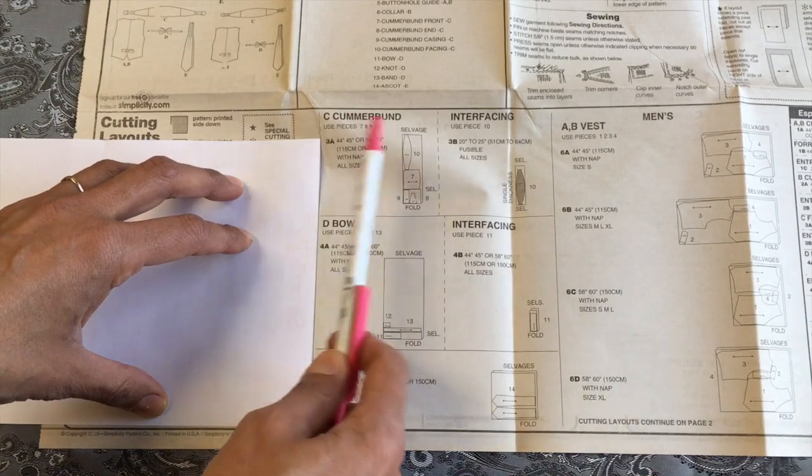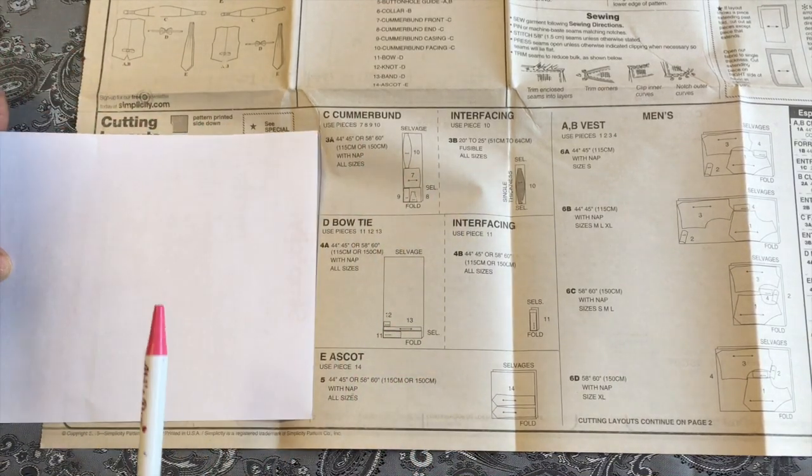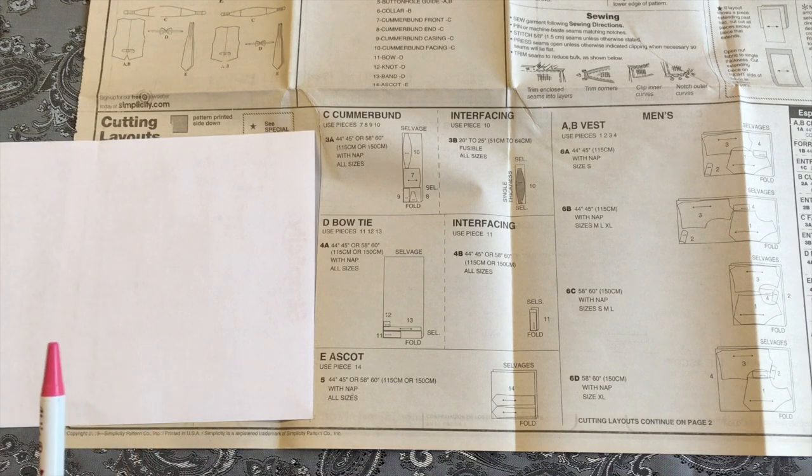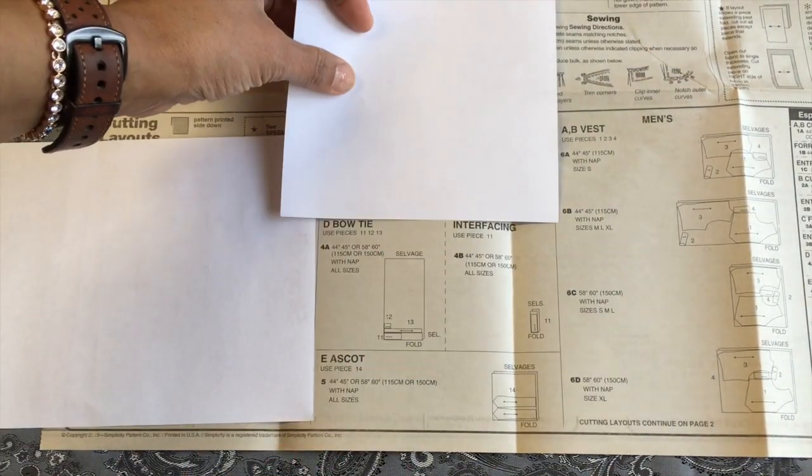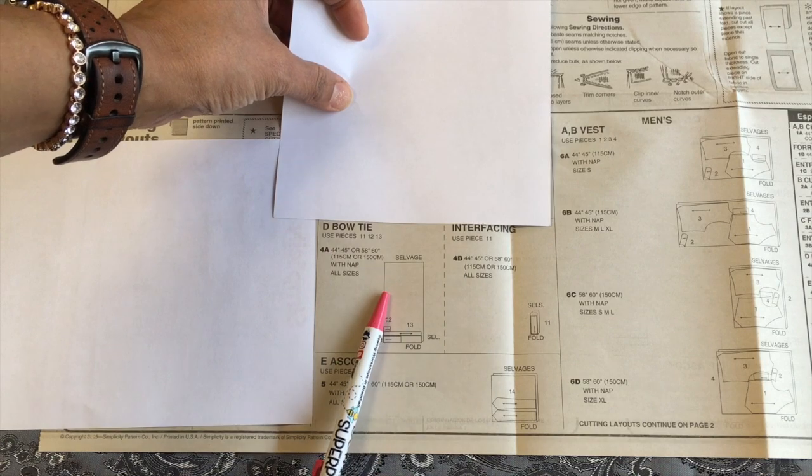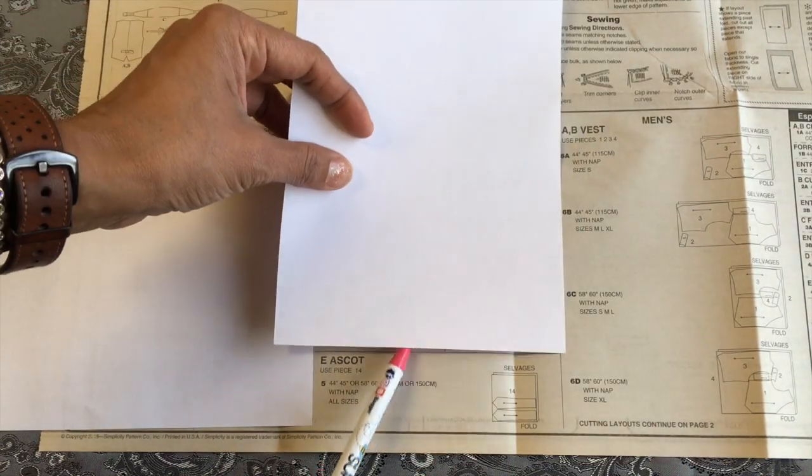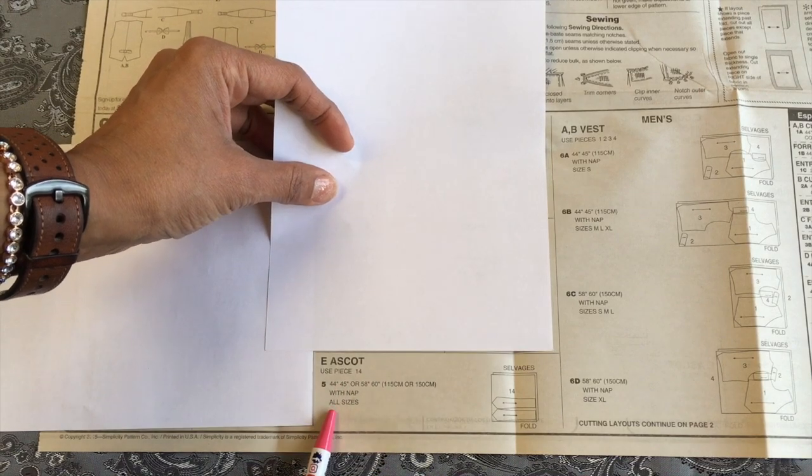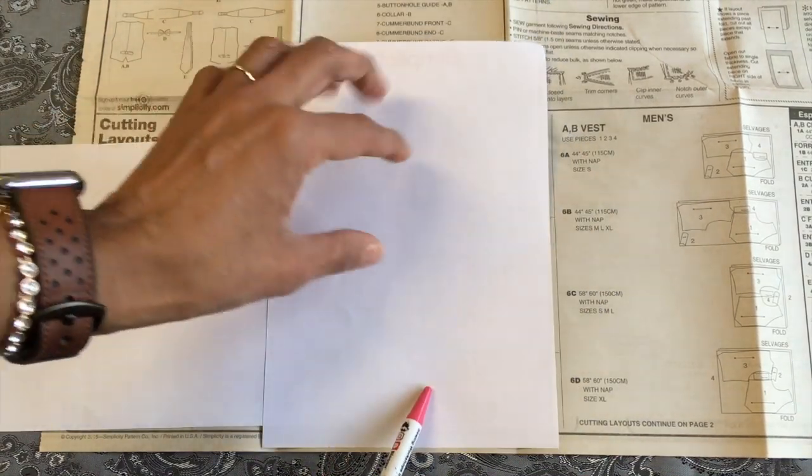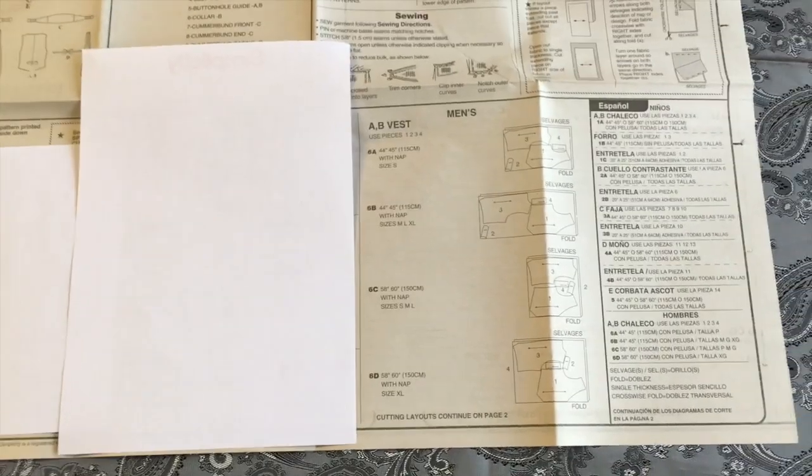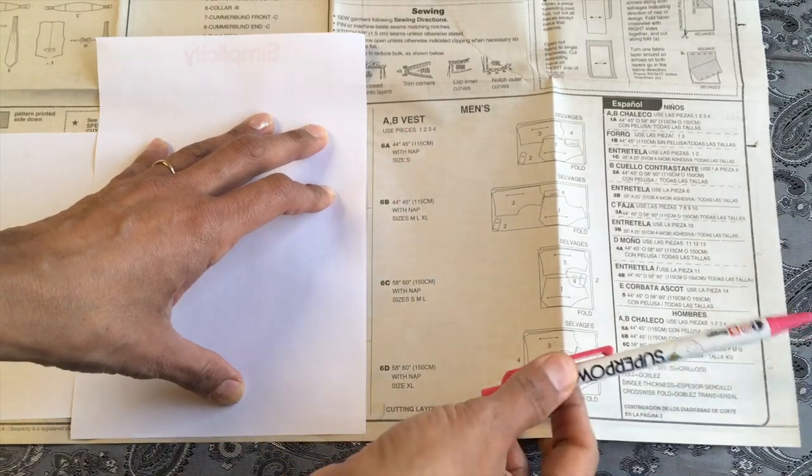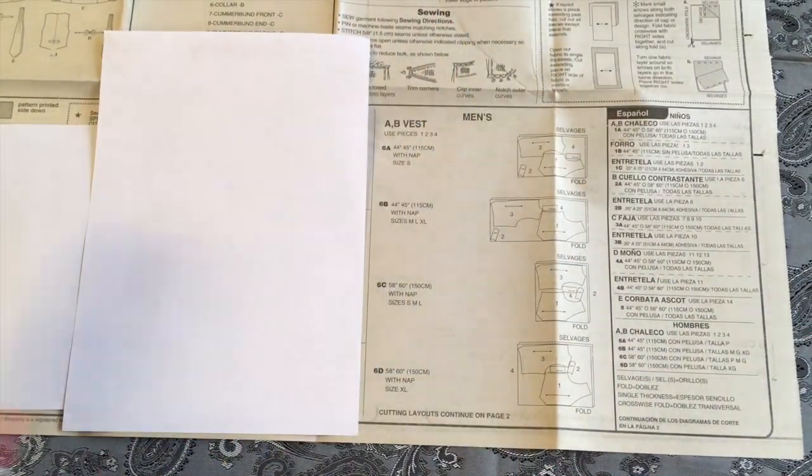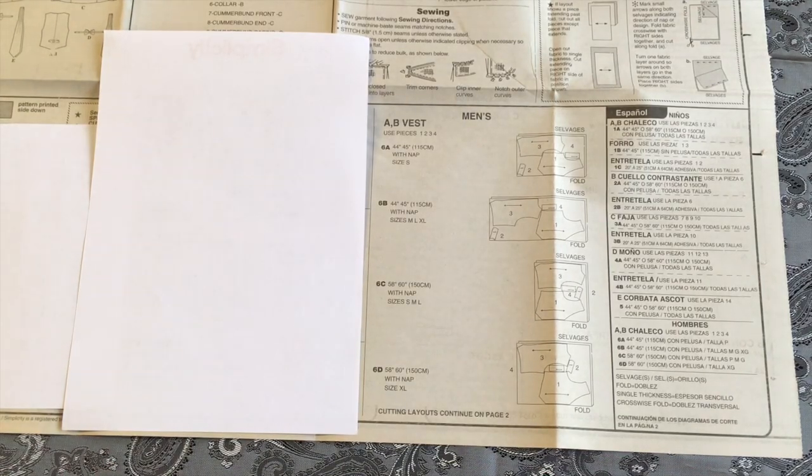This bit here is the bow tie with the interfacing, and then the ascot. We don't need to worry about those for the moment either. So we go over to this section here, and there we go. This is the men's vest, A and B. But remember this is American, we call it a waistcoat in the UK. America they'll call it vest.